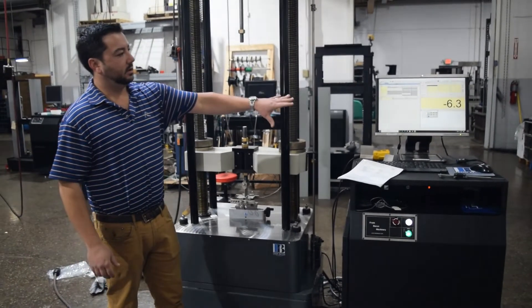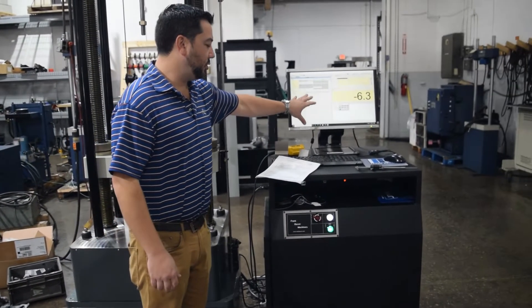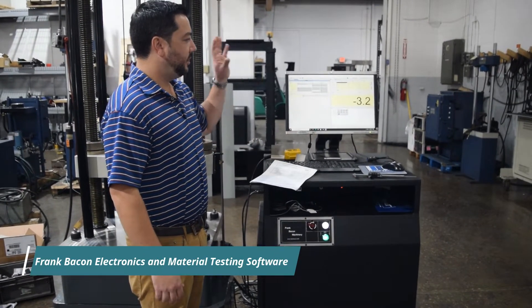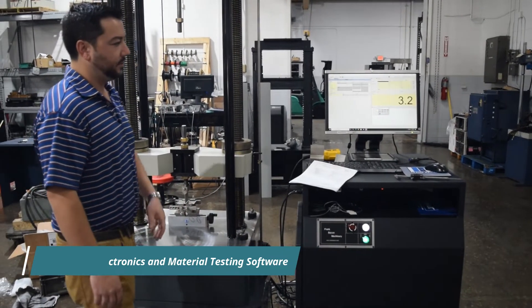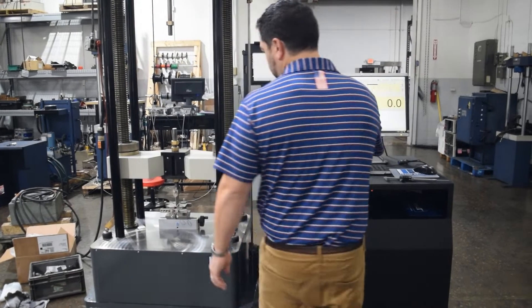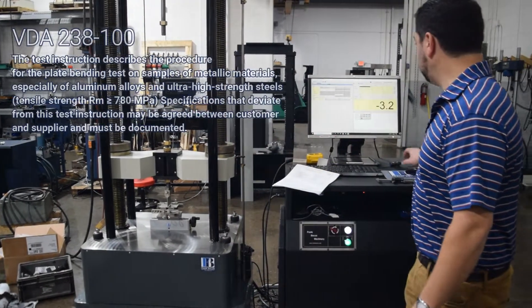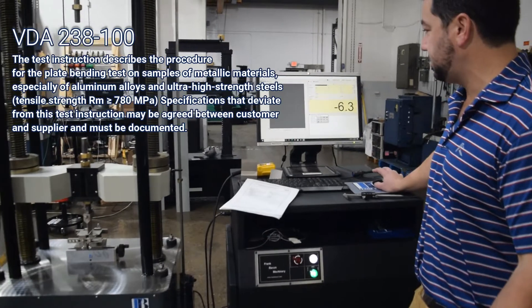We're using our software control here to program per spec the preload and test rate that we need to bend this material. At this point, once we're set and the specimen is in place, all we need to do now is make sure we're zeroed and press start.